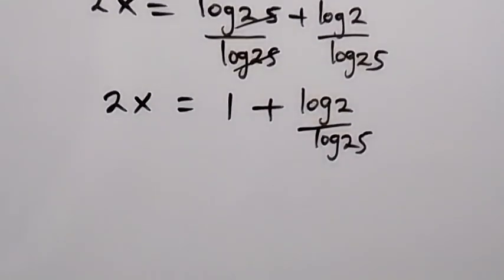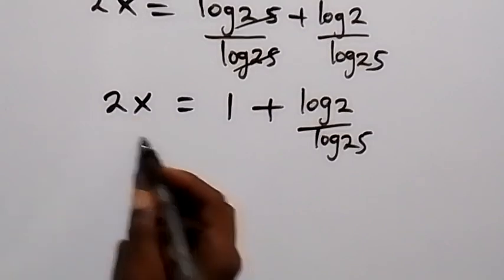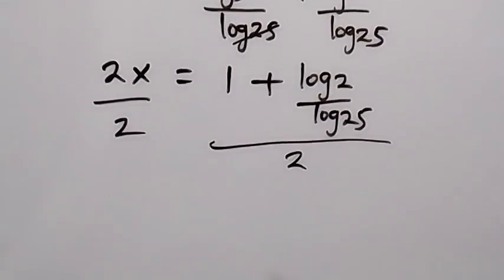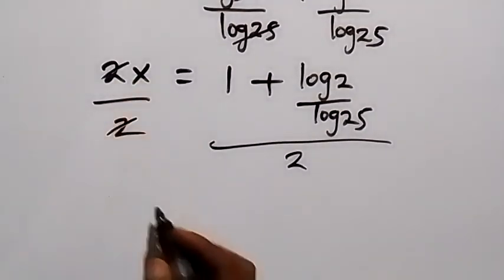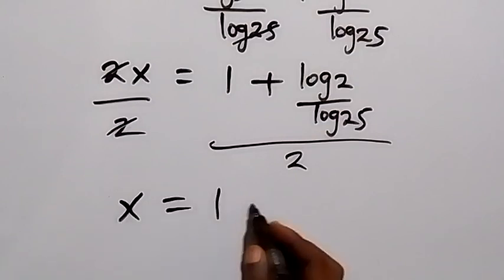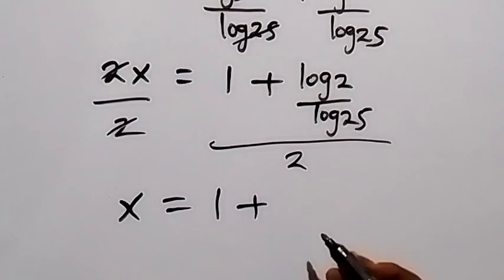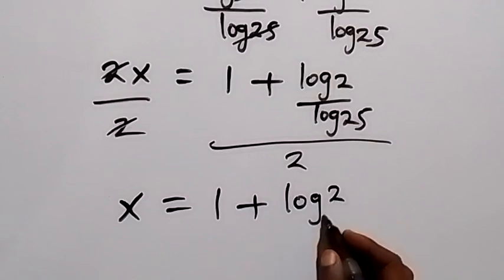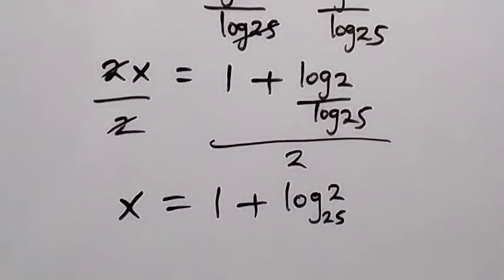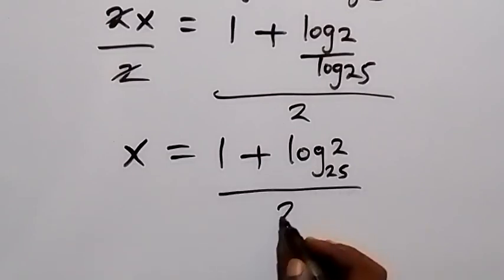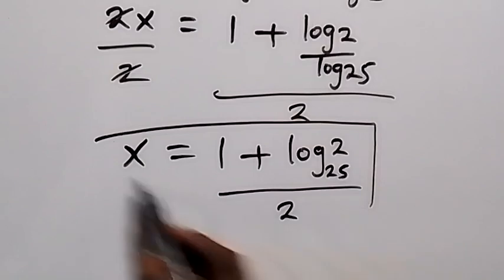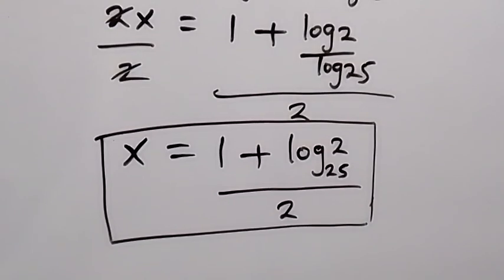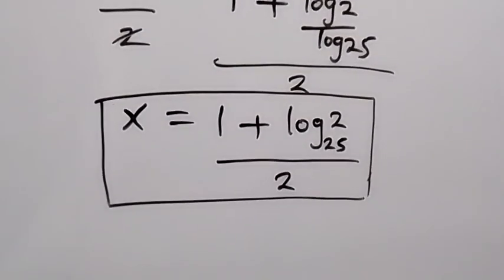Since we are looking for x, let's divide both sides by 2. So 2 cancels 2 here, and x now equals 1 plus log 2 divided by log 25, then all divided by 2. We can write log 2 over log 25 using change of base as log base 25 of 2. Therefore x equals 1 plus log base 25 of 2, all divided by 2.